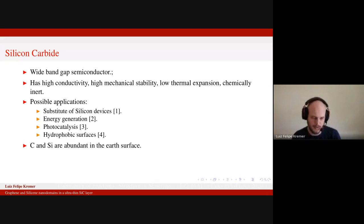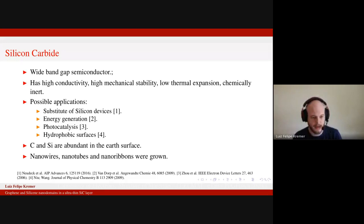Also, silicon and carbon are abundant in their surface, so it's probably a cheap material to deal with. Besides the bulk, silicon carbide has already been grown as nanowires, nanotubes, and also nanoribbons.